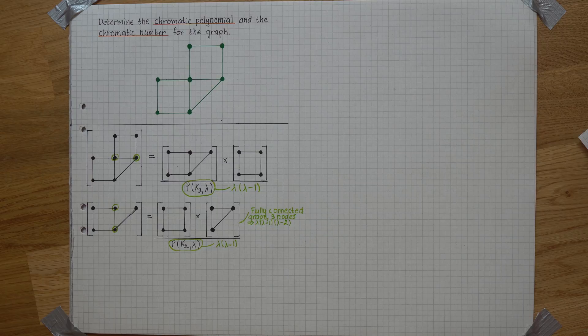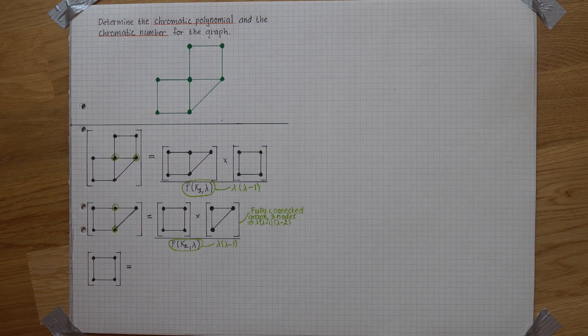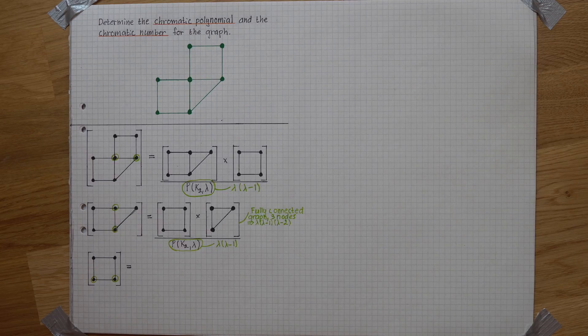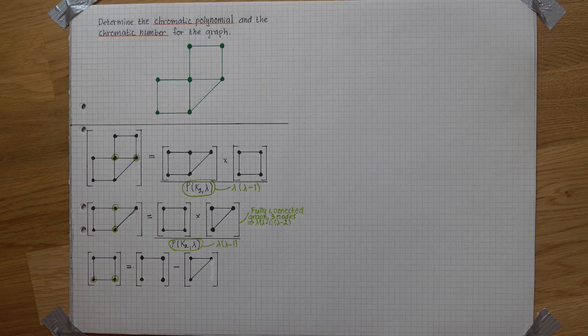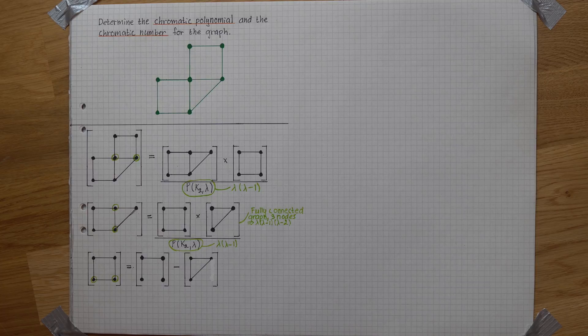Now we only have these two subgraphs left to break down. If we want to remove the connection between these two points, we can do that if we then subtract a graph with those same points conjoined instead.